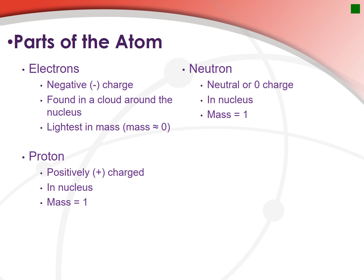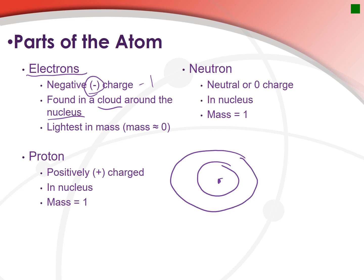Let's go a bit more into the parts and their characteristics. Electrons have a negative one charge. They are found in a cloud outside of the nucleus. For now, just understand it's found outside the nucleus. I'm going to use the Bohr model to describe how electrons are located — we'll say they go in rings, but in actuality we'll talk about the electron cloud in a few units.